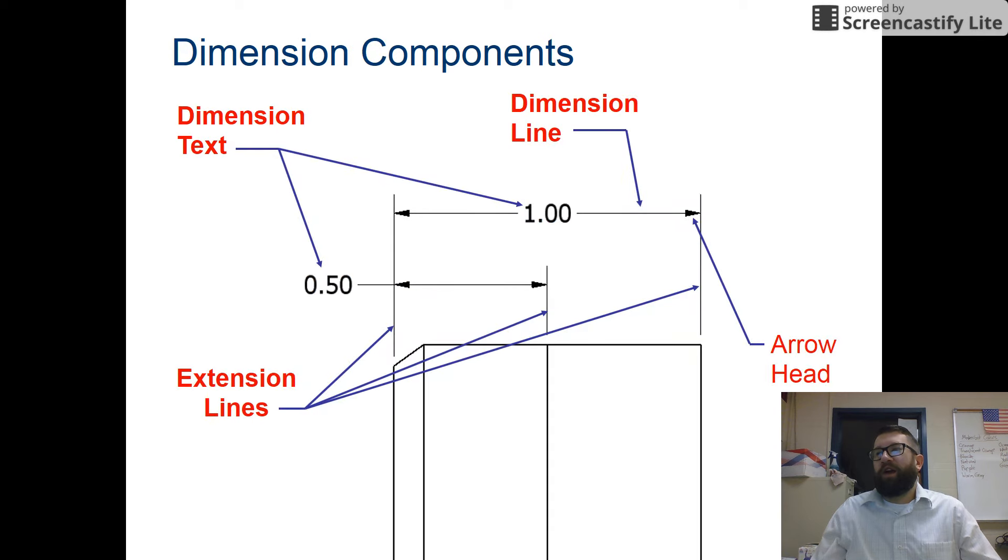All right, so we have a few dimension components. We have the dimension text, which is the number that's associated with the dimension. We have the dimension line that identifies the span of a particular dimension, and arrowheads at the end. Then we also have extension lines. So these four together make up a dimension.